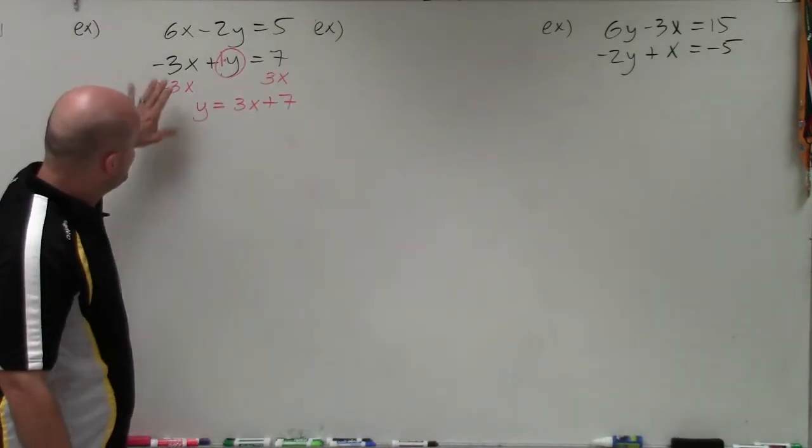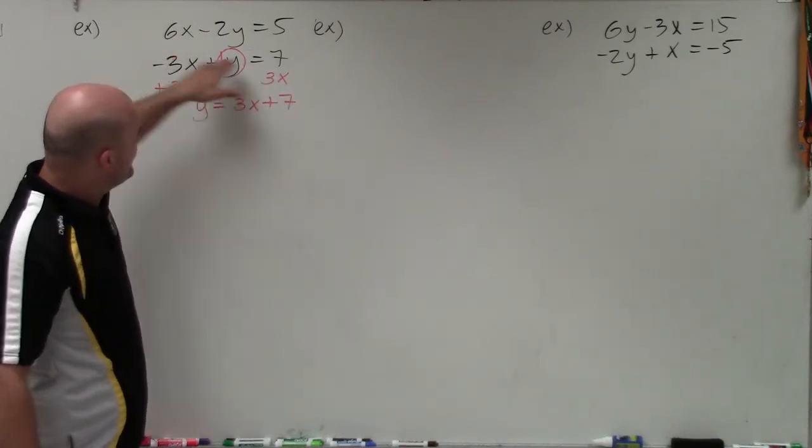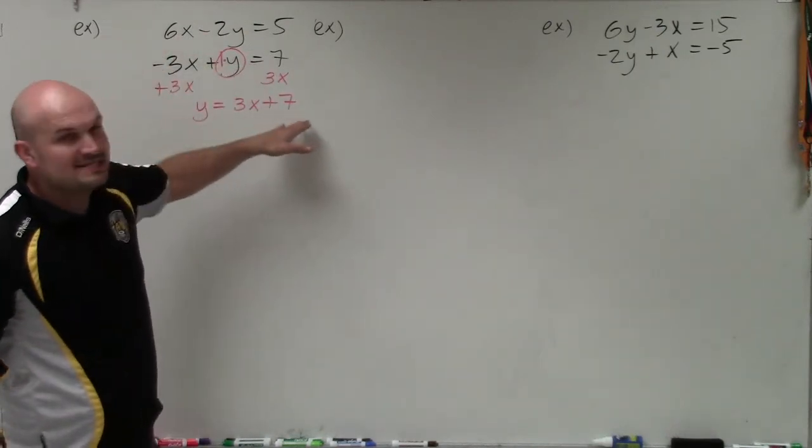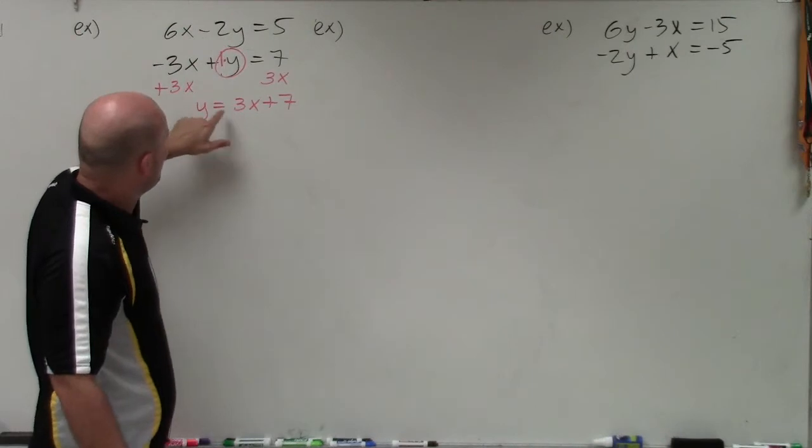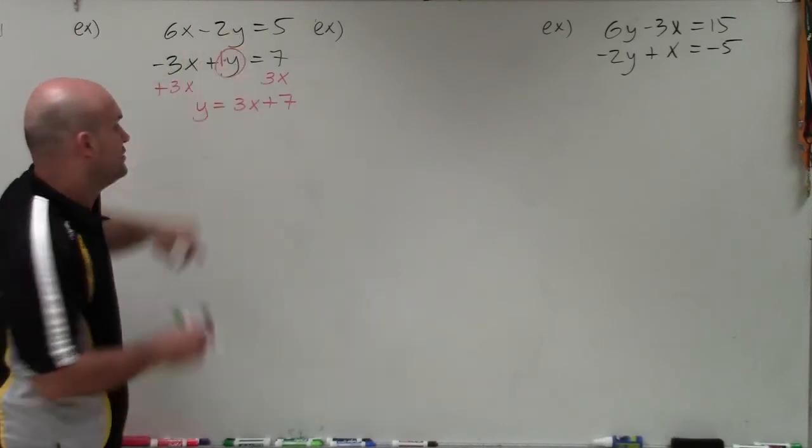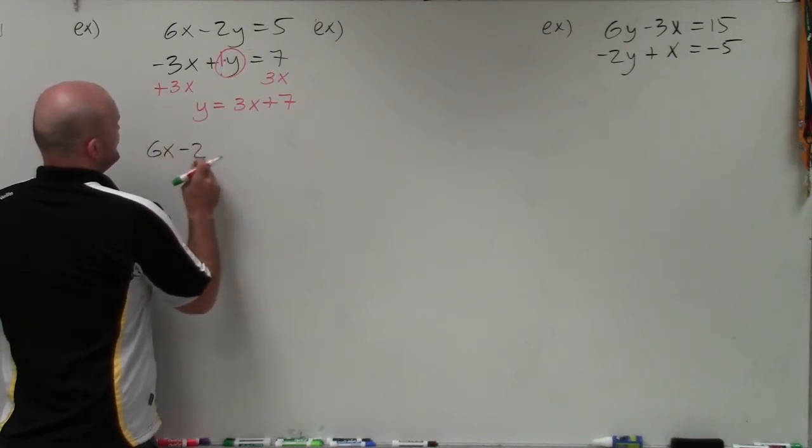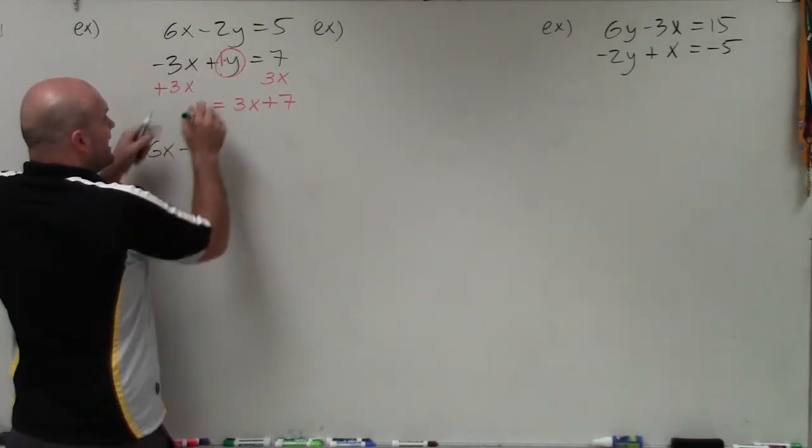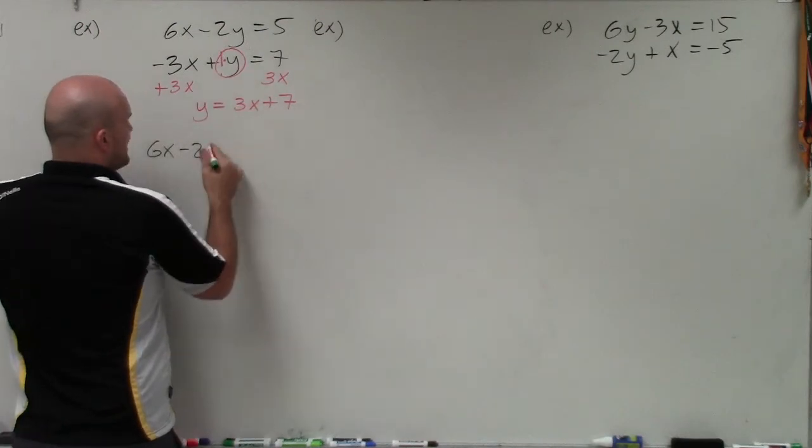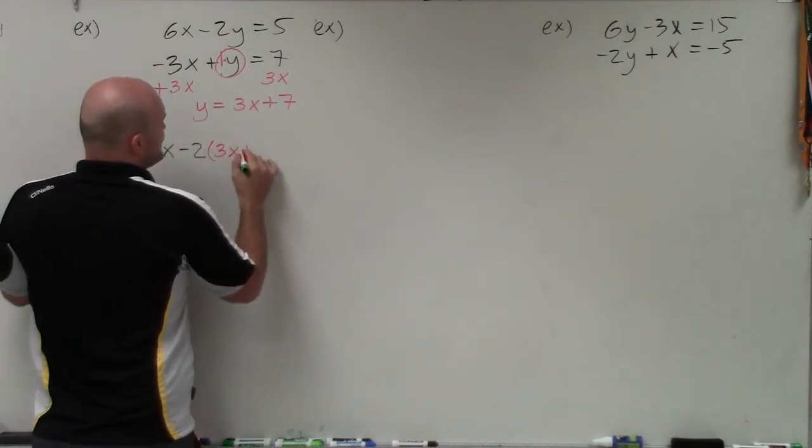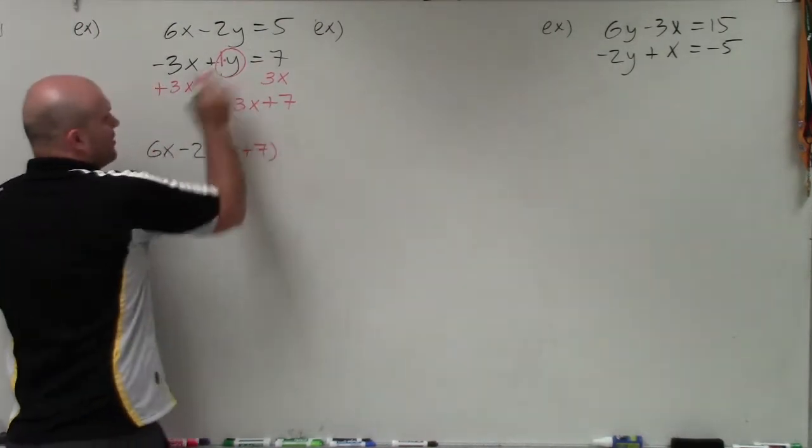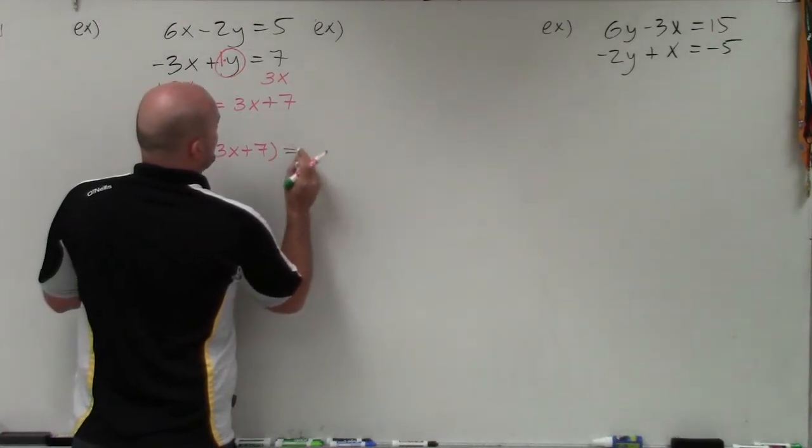Now what we do is we take our value. Since I've taken the second equation and just rewrote it so y is equal to it, now I'm going to plug that into the other equation. So in doing that, I now have 6x minus 2, and instead of times y, I'm going to replace y with 3x plus 7, because that's the value of y from the other equation, equals 7.